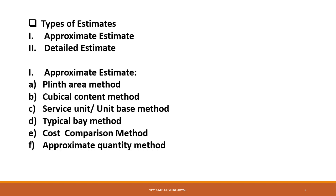Approximate estimation is also called a primary estimate or preliminary estimate. It is required for studying various aspects of a work or project and for its administrative approval. It is necessary to understand the various aspects of a work project. In the case of a commercial project, it can decide whether the net income earned justifies the amount invested or not.